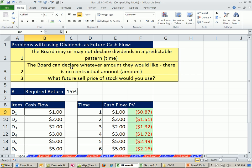Problem number two, the board can declare whatever amount they would like. There is no contractual amount. It's not like debt that says you will pay 5%. Again, companies like to be pretty predictable. And the ones that are, you can use the discounting future dividend cash payment method. But these are two problems.